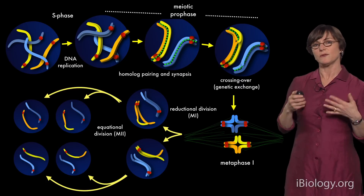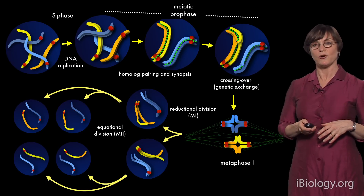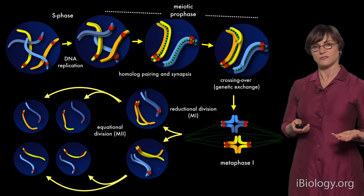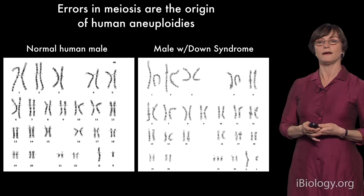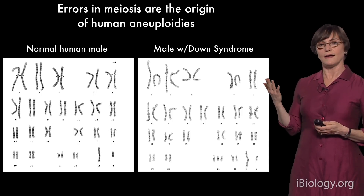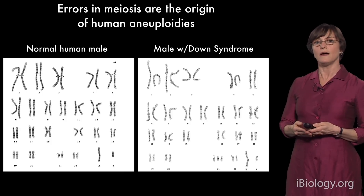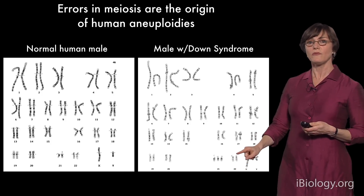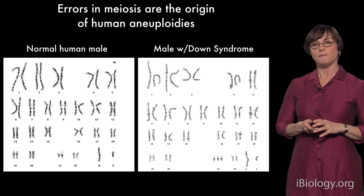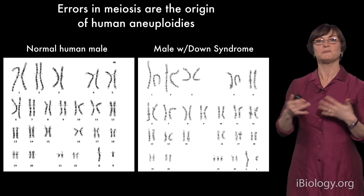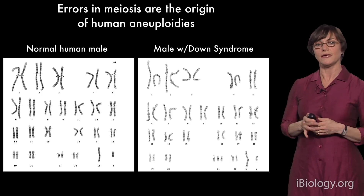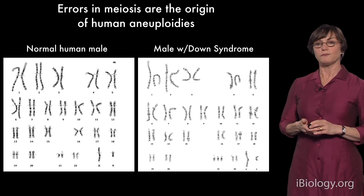We're interested in meiosis both for understanding this fundamental cellular process shared by almost all eukaryotes, and for understanding how errors in meiosis arise — partly because they give rise to many human birth defects. The best-known example is Down syndrome, when an infant inherits an extra copy of chromosome 21. This almost always happens due to errors in female meiosis in humans. Male meiosis, even though it happens much more abundantly, is actually much more faithful and less error-prone, for reasons we don't fully understand.